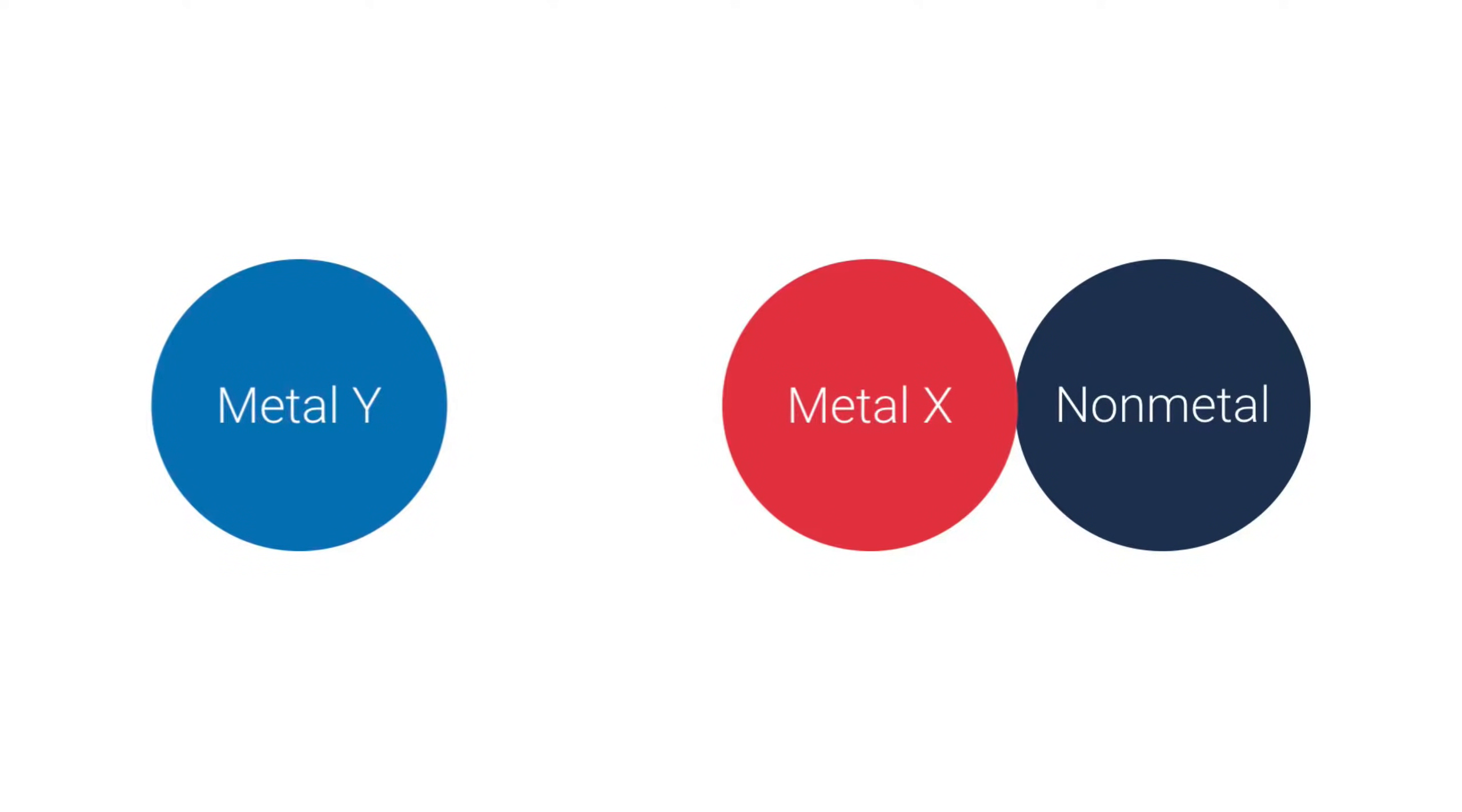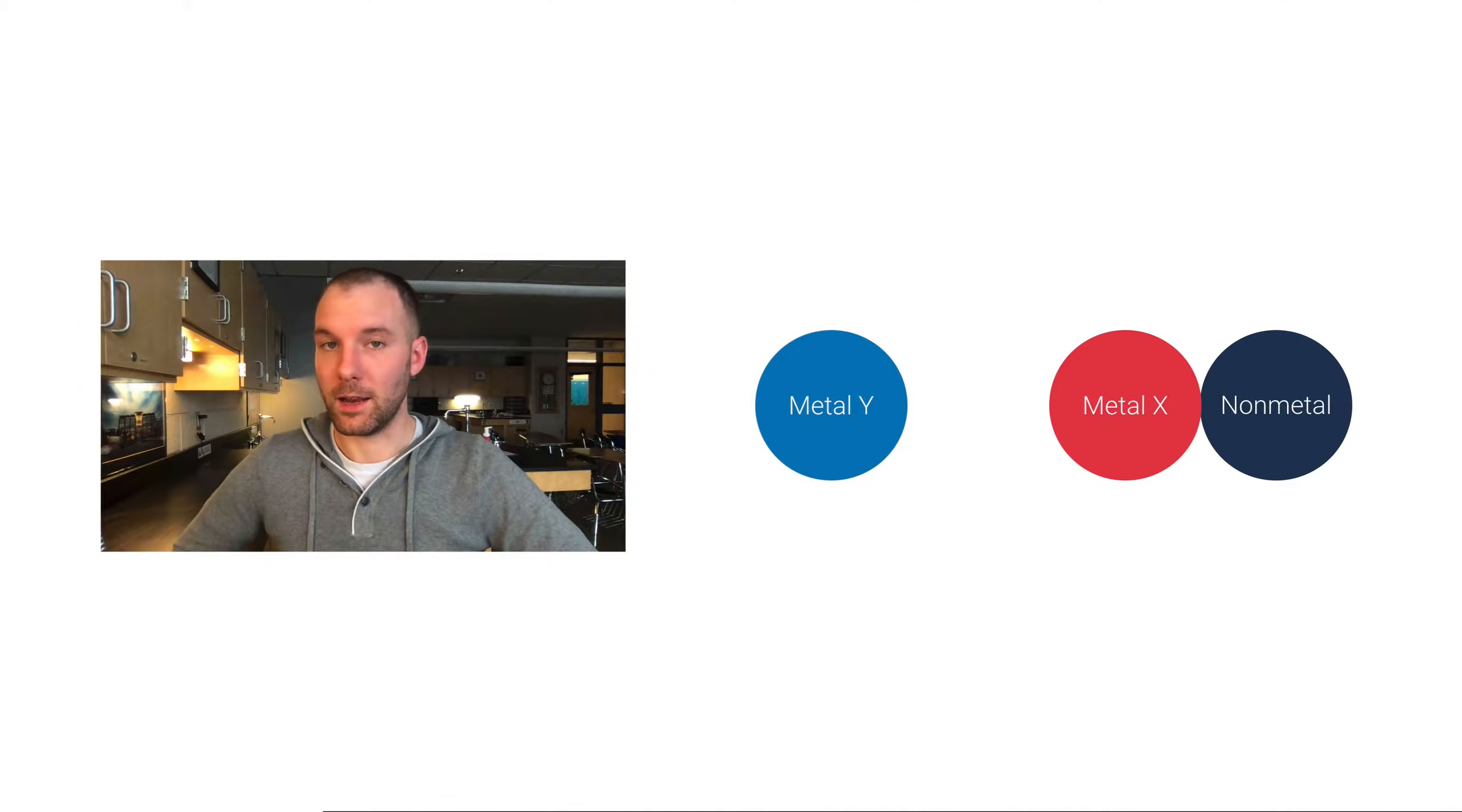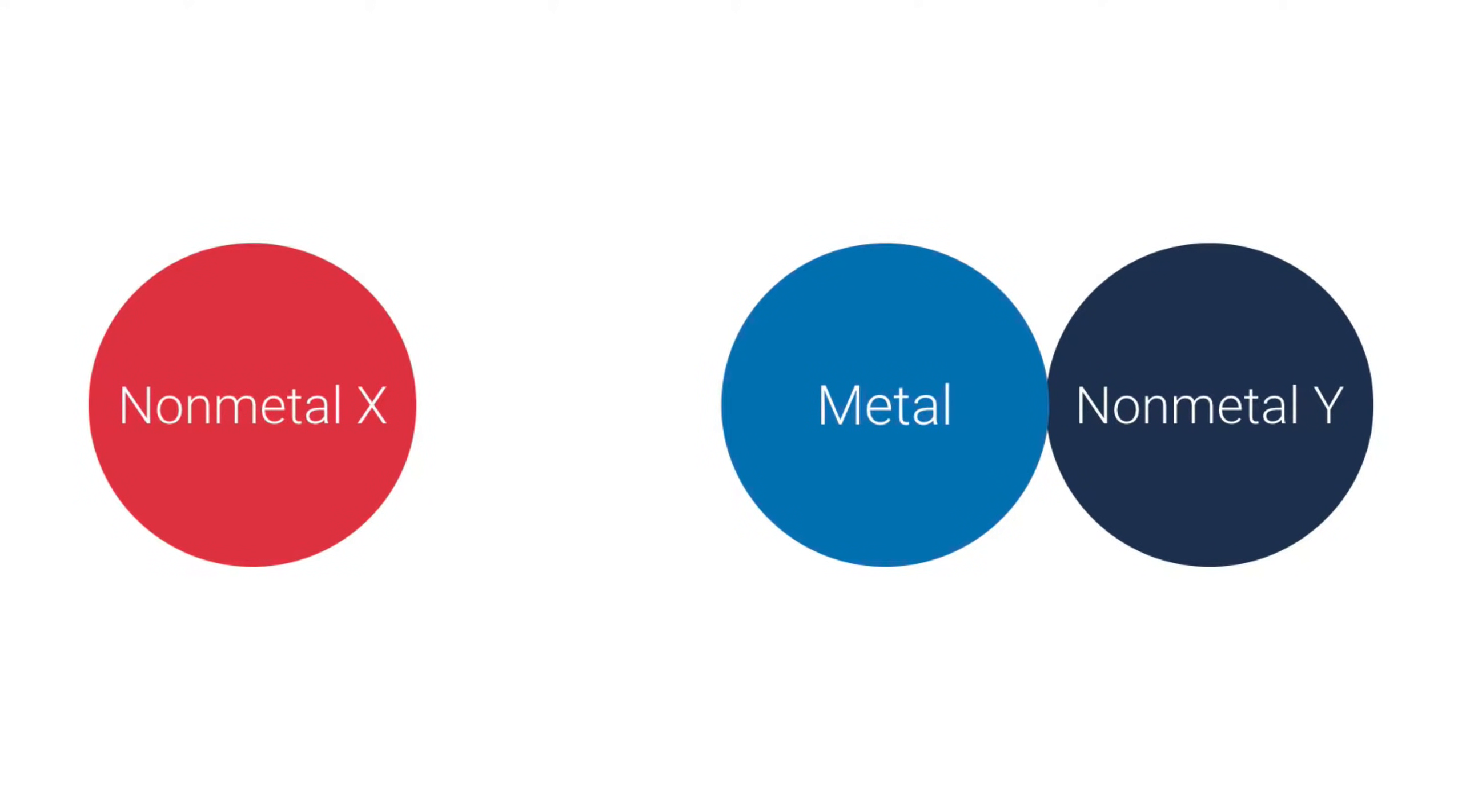When that happens, you have the metal that was in the compound as a reactant off on its own as a product, and then the more reactive metal is going to be in the compound with the non-metal. There is one more variation of this, and that's if the lone element is a non-metal. If the lone element is a non-metal, then it would replace, potentially, the non-metal in that ionic compound. So you have to compare the two non-metals in this situation. If non-metal X is higher up on the activity series than non-metal Y, we're going to get a single replacement reaction, and this time non-metal Y would be off on its own as a product.